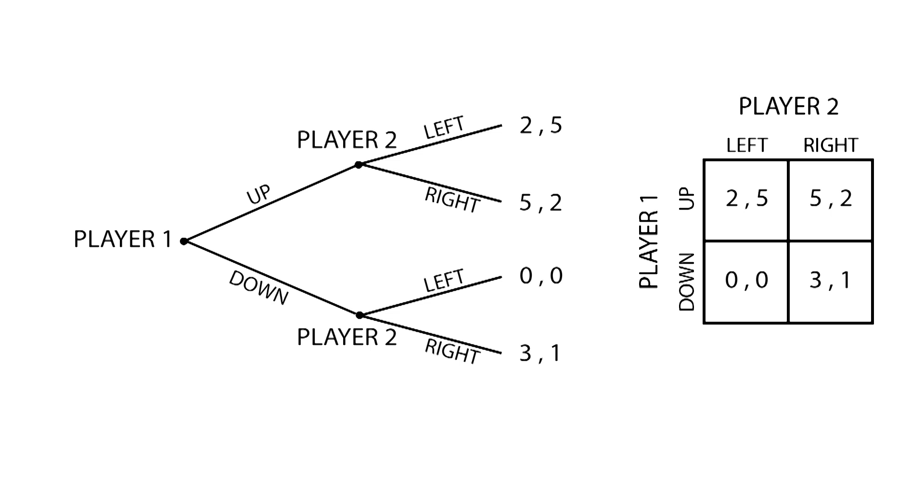In this particular case, we know that player 2 will choose left if player 1 goes up, and right if player 1 goes down, since these are the moves that maximize player 2's payoff. Because there is complete information and therefore each player's payoffs are known, player 1 knows these choices in advance, and will therefore choose to go down, because his final payoff will be greater.